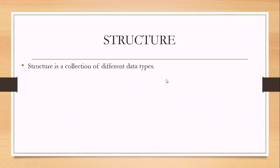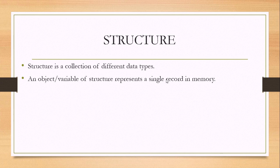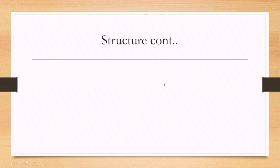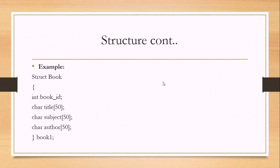First of all let's revise what is a structure. Structure is a collection of different data types. An object or variable of structure represents a single record in memory. For example, in the last lecture we took an example of a structure named 'book'. We made a structure and kept its name as 'book', and inside the curly braces we defined its data members.